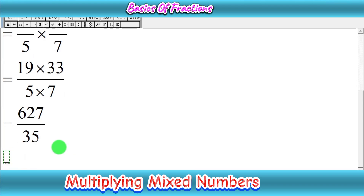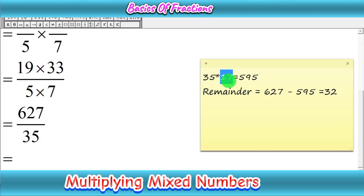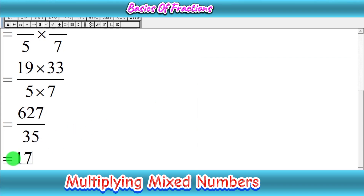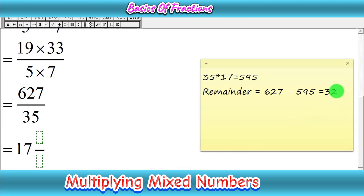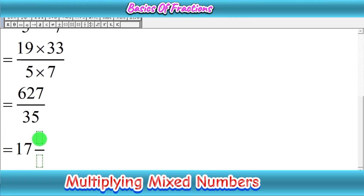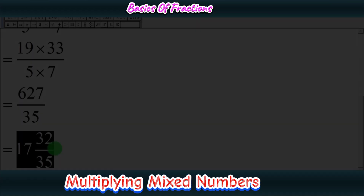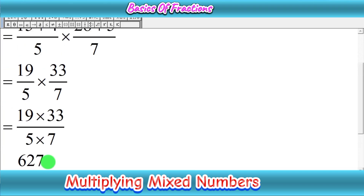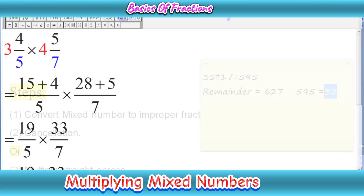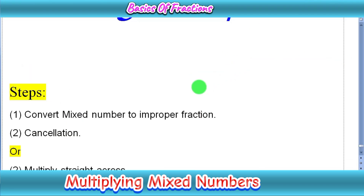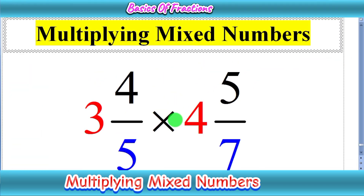Since 35 times 17 is 595, the whole number is 17. The remainder 32 becomes the numerator and the denominator stays 35. So our final answer is 17 whole 32 upon 35. That is the result of multiplying 3 whole 4 upon 5 times 4 whole 5 upon 7. I hope this was helpful. Thanks for watching, and don't forget to subscribe to my channel.